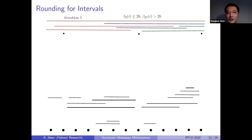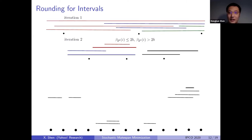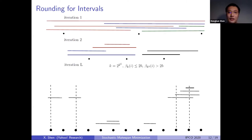After iteration one, every remaining point has beta_2 squared load at most 2b. So we start iteration two, looking for points whose beta-cubed value is larger than 2b. These points and any interval with load on them form the iteration-two list. After iteration two, every remaining point has beta-cubed effective size load at most 2b, so we look at beta to the fourth load. In general, in iteration i, setting k equal to 2^(2^l), all remaining points have beta_k value less than 2b, and we look for points with beta_{k^2} load larger than 2b.